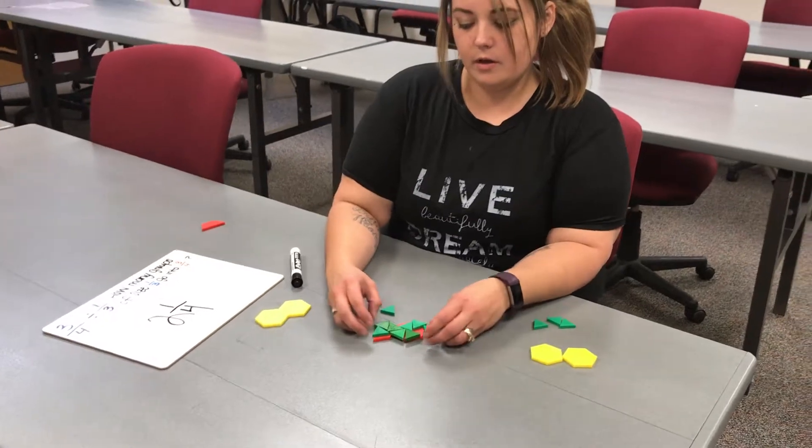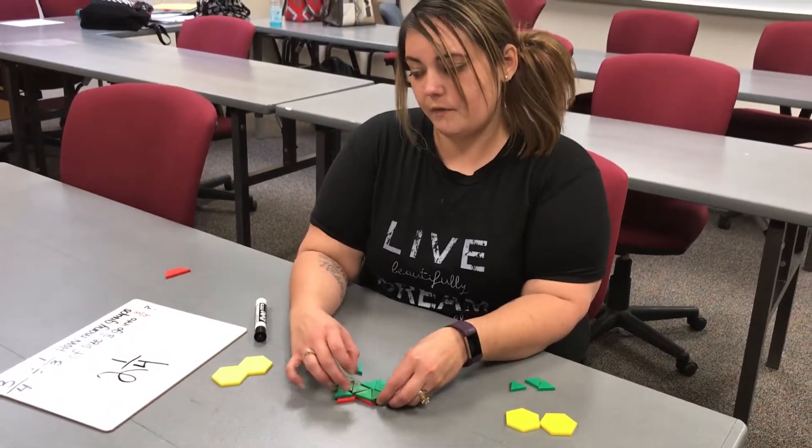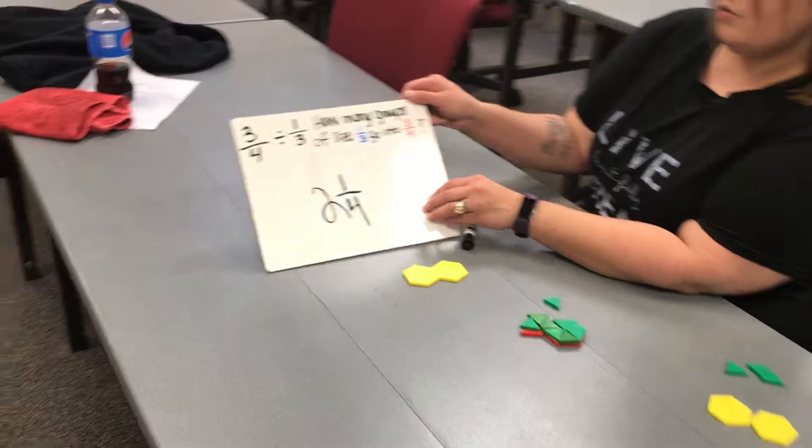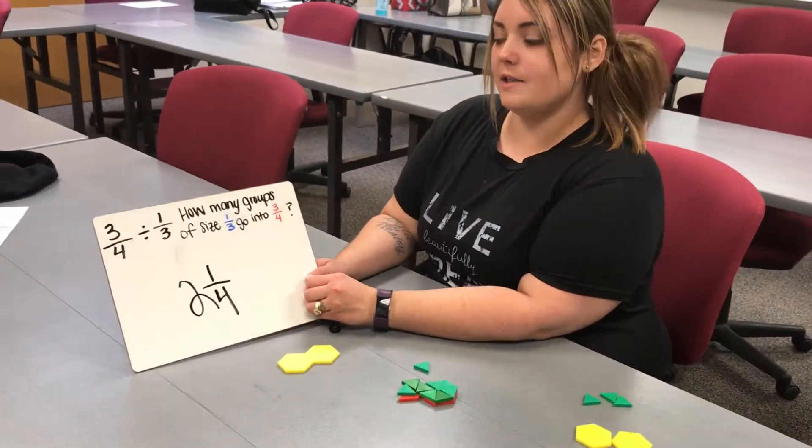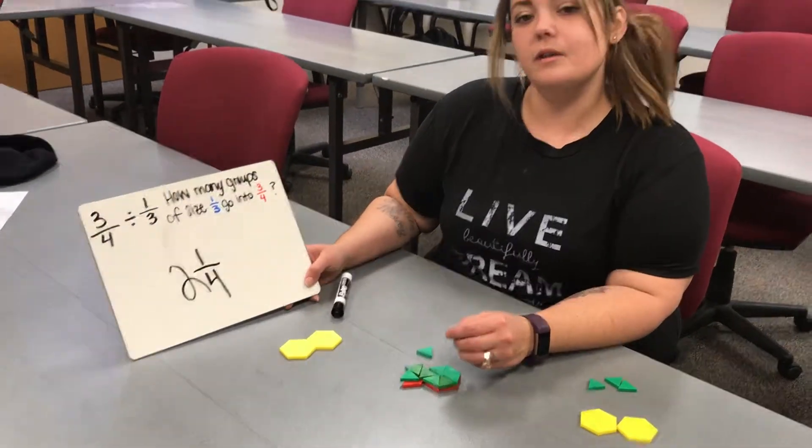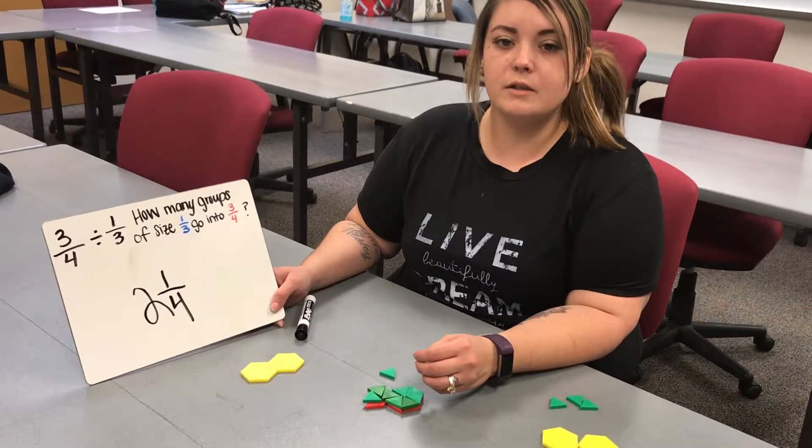So here we have our answer that 3 fourths divided by 1 third equals 2 and 1 fourth. And that is how you can use pattern blocks to divide fractions with unlike denominators.